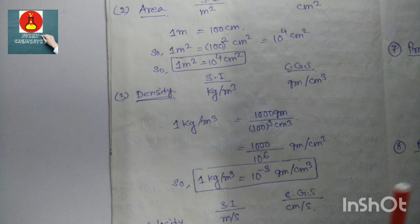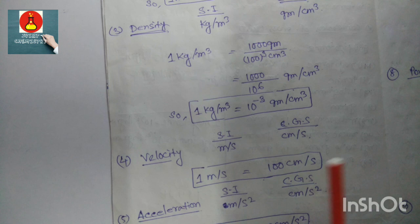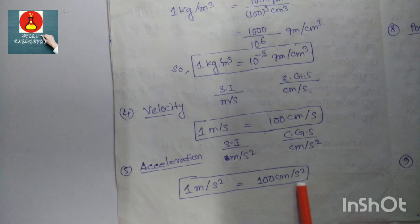Velocity: SI unit is m/s and CGS unit is cm/s. So 1 m/s equals 100 cm/s. Acceleration: SI unit is m/s² and CGS unit is cm/s². So 1 m/s² equals 100 cm/s².